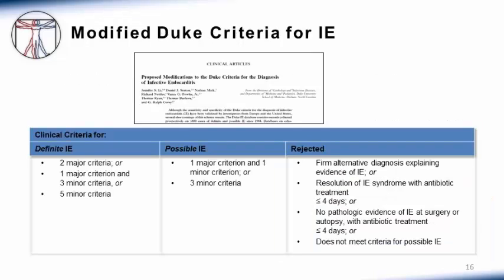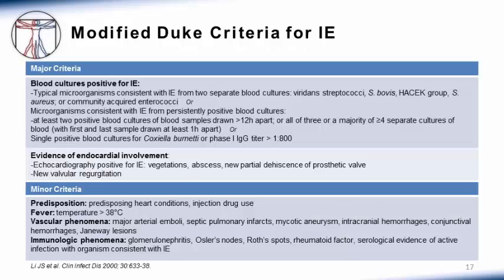The tools that we use for the diagnosis of infective endocarditis are summed up in the modified Duke criteria. Using major and minor criteria, we can classify the diagnosis of infective endocarditis into definite, possible, and rejected. Major criteria consist of blood cultures positive for microorganisms consistent with infective endocarditis, as well as evidence of endocardial involvement, mostly by echocardiography. The minor criteria include a predisposition to infective endocarditis such as a predisposing heart condition or injection drug use, fever, vascular phenomena, and immunologic phenomena. Take a few minutes to review the Duke criteria in detail.